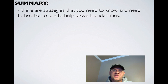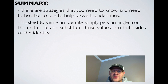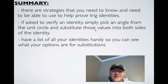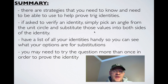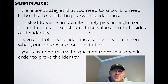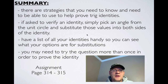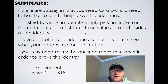In summary, there are strategies you need to know and use to prove trig identities. If asked to verify, simply pick an angle from the unit circle and substitute into both sides. Keep a list of all your identities handy so you can see your substitution options. You may need to try a question more than once. Practice is the only way to improve — there are lots of questions on pages 314 to 315, and extra practice questions are available.